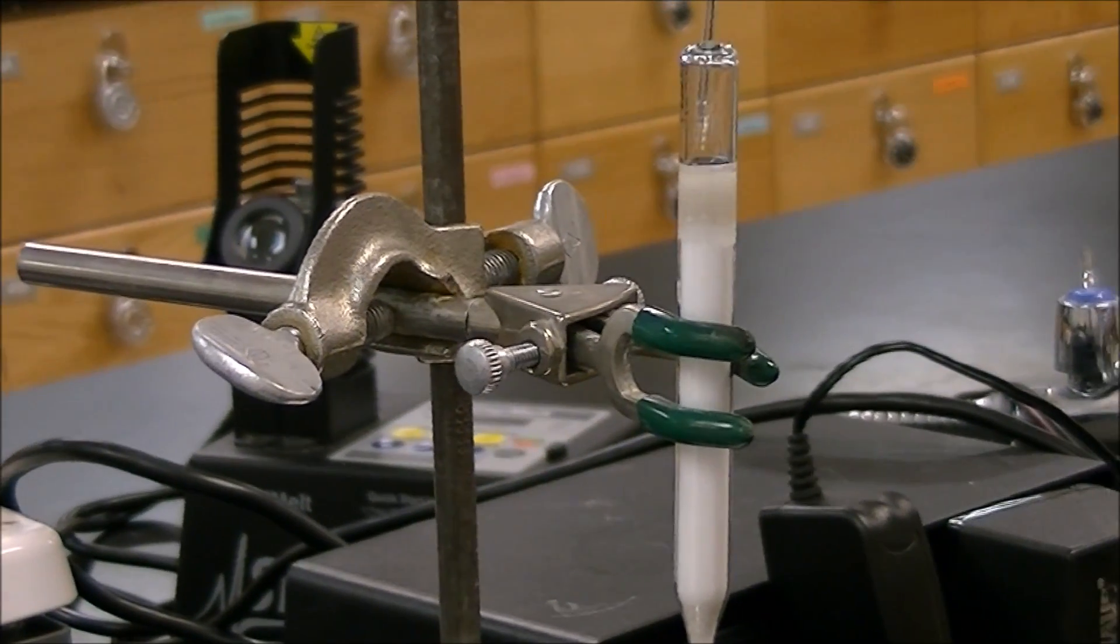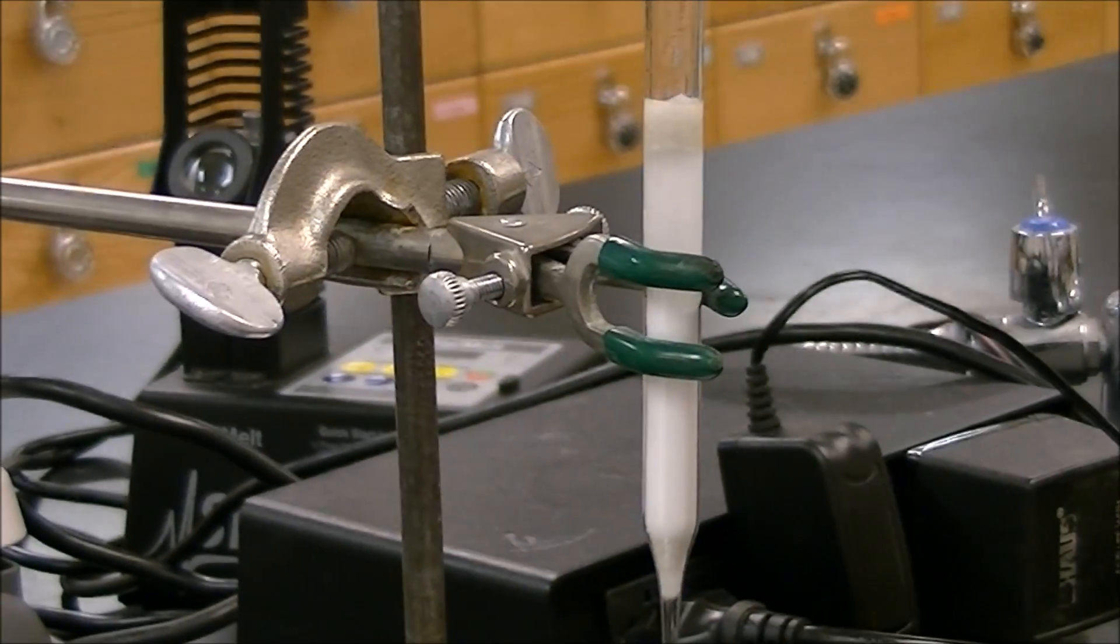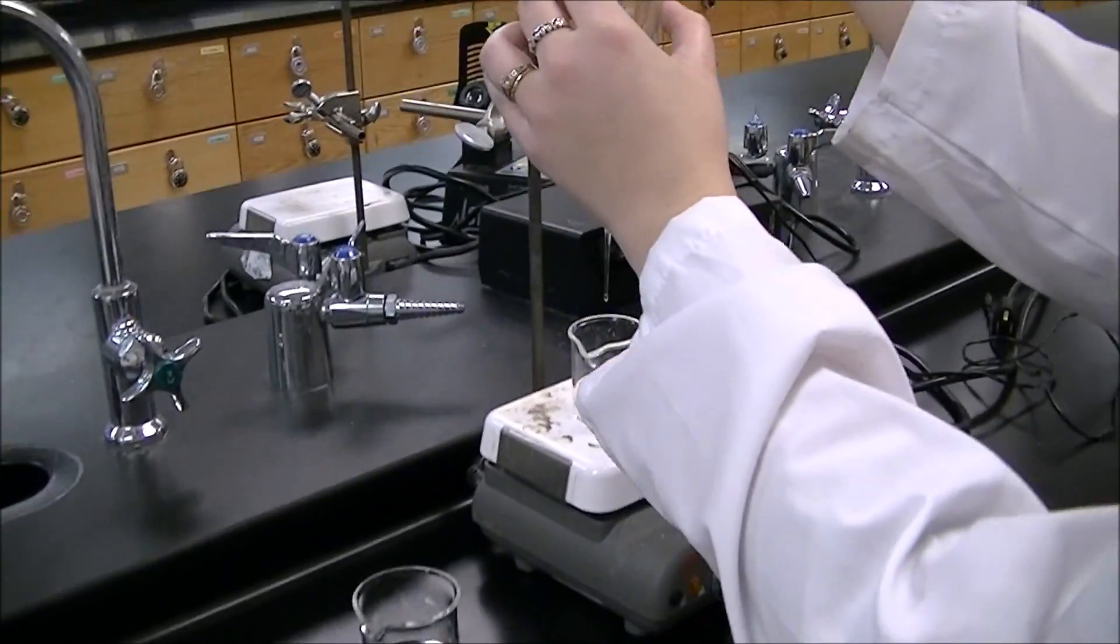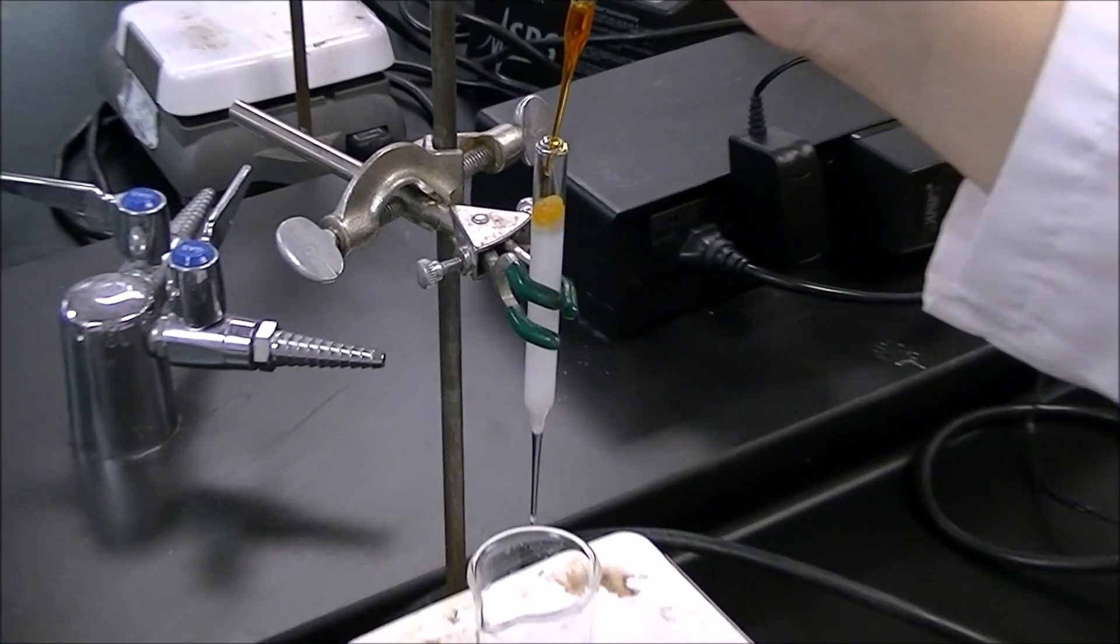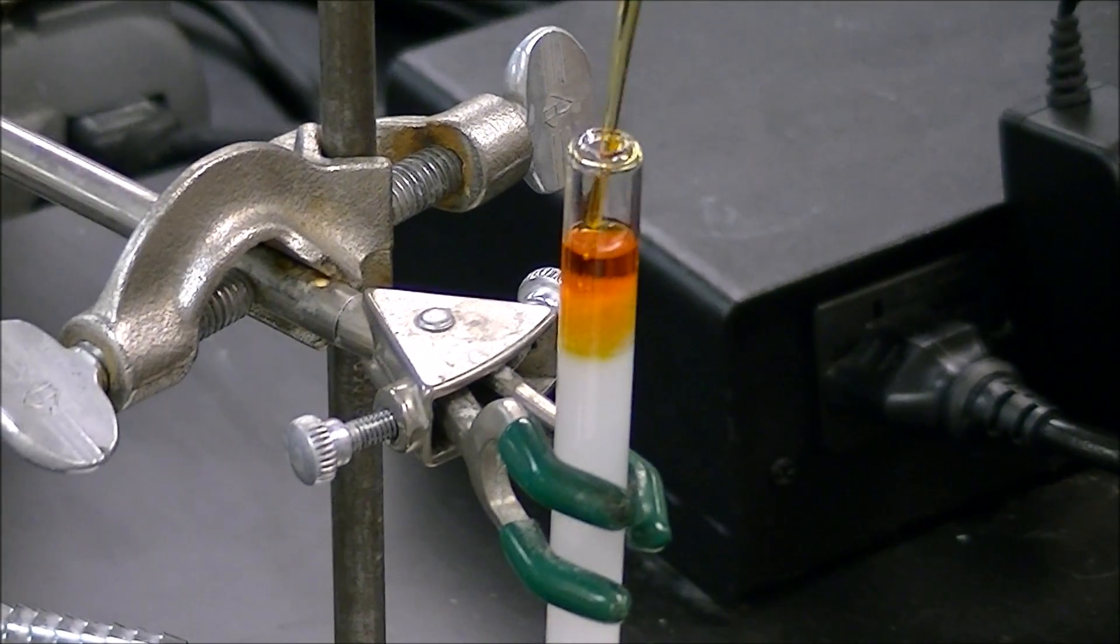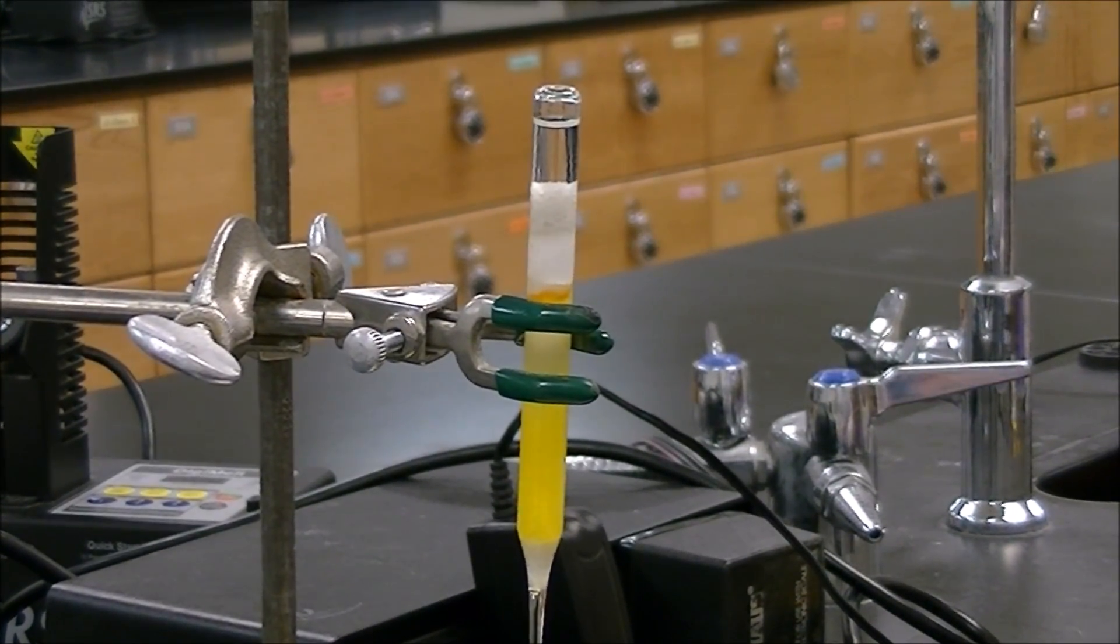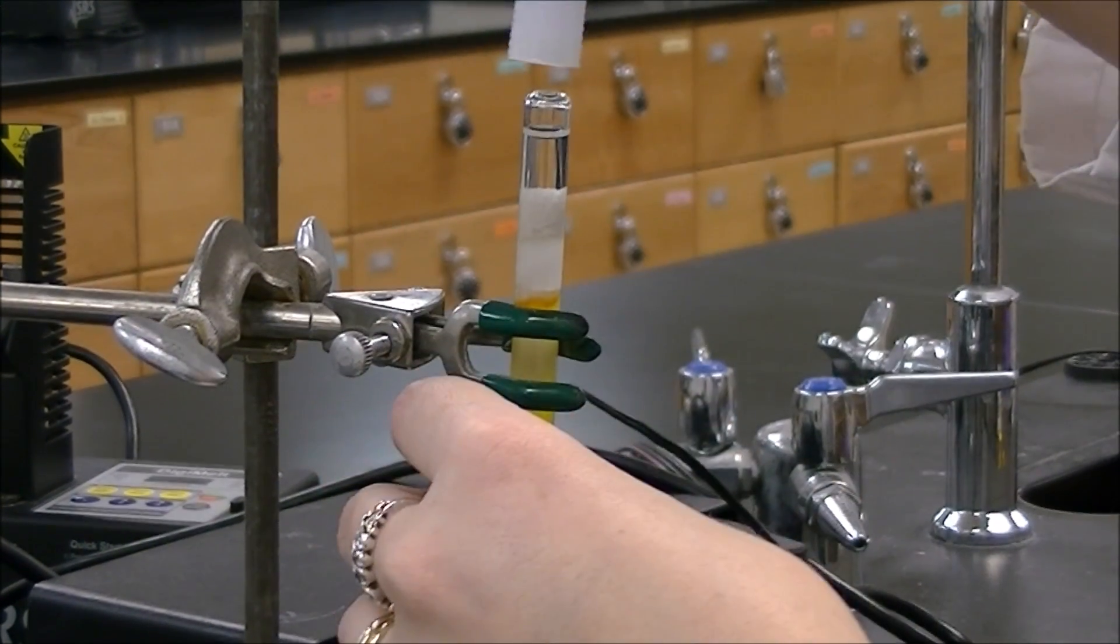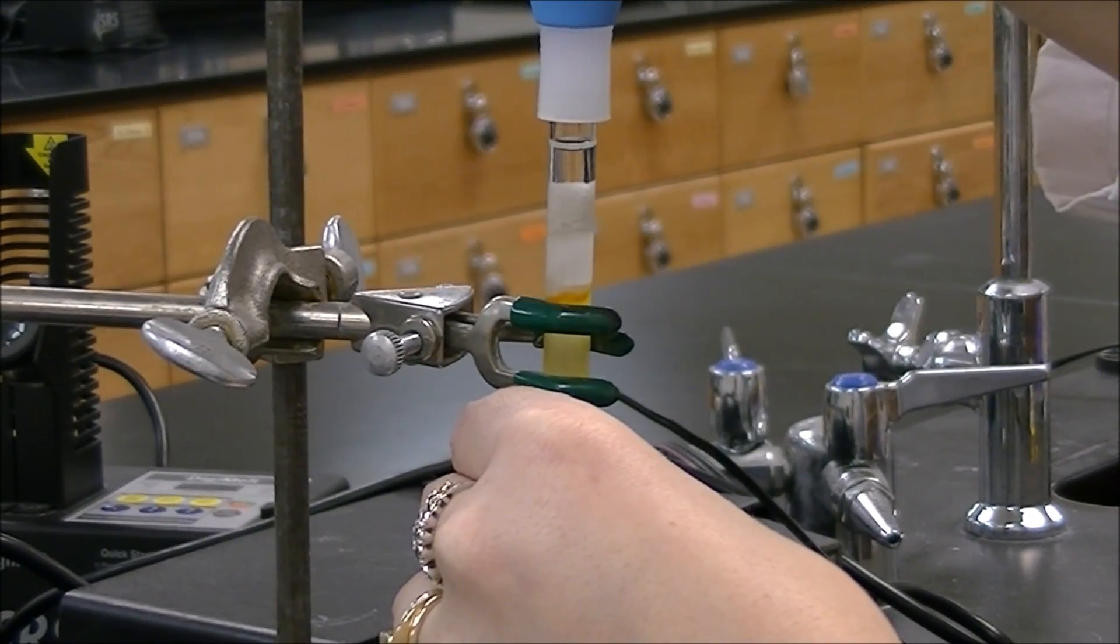We need to wet the column before we can run the separation. You do this by completely saturating the column with your solvent. Now add your sample as evenly as possible to the column. The mixture will begin to separate as you continue to add solvent to the column. Once the sample has traveled completely onto the silica gel, you can use a bulb to push each portion of solvent through the column faster.